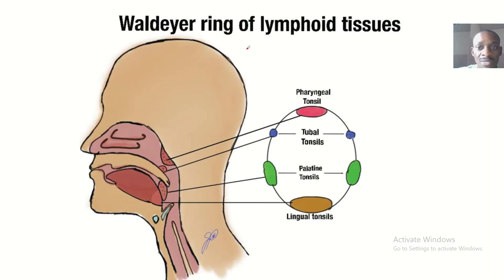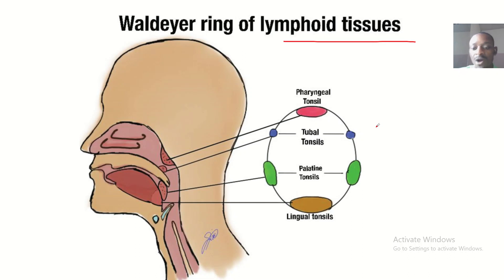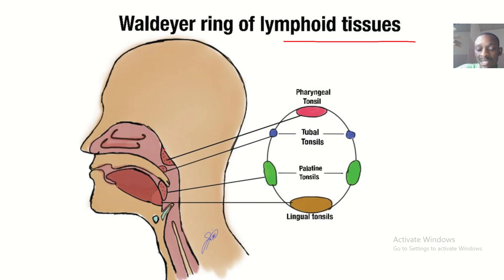Waldeyer's ring of lymphoid tissues. And from this picture, you can see that the Waldeyer's ring is located inside your mouth — like your buccal cavity down towards the pharynx.